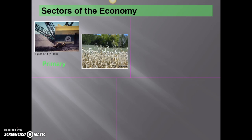The first sector of the economy to talk about is what's called the primary sector, and the primary sector has to do with extracting resources or with using the earth. Farming and agriculture is a primary economic activity. Mining is a primary economic activity. Logging is a primary economic activity. Anything where we're pulling things out of the earth — those are all primary economic activities.